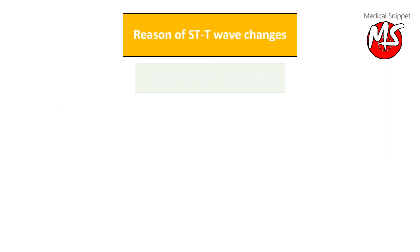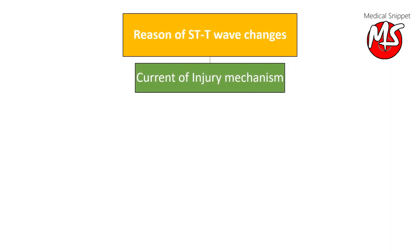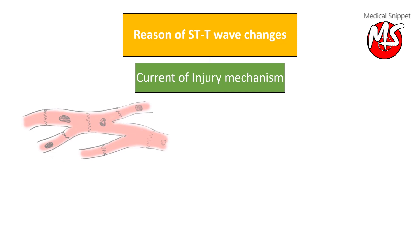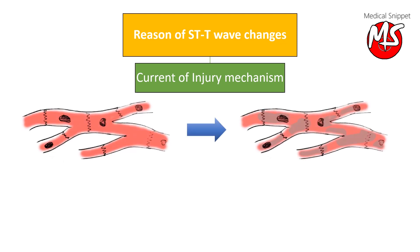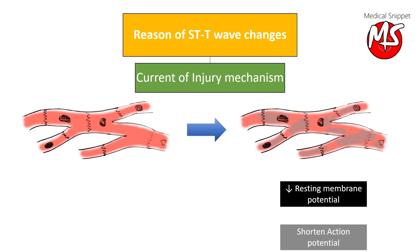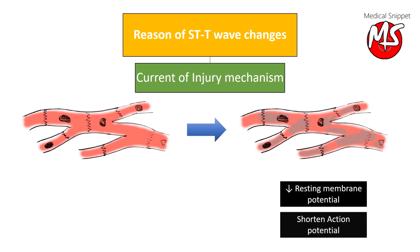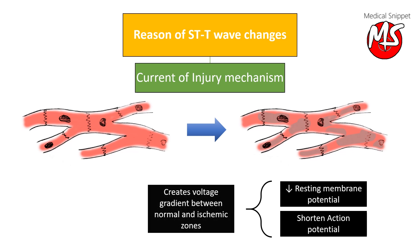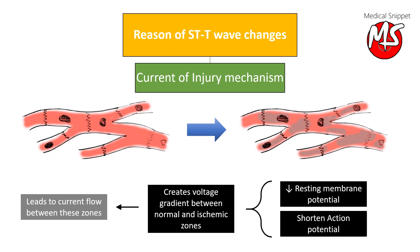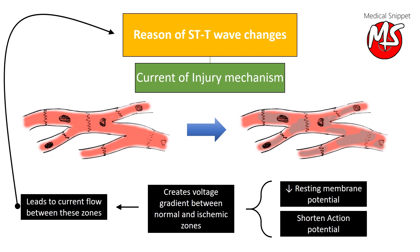ST and T wave changes in ECG are due to the current of injury mechanism. When normal myocardium gets infarcted, there is a decrease in resting membrane potential and the action potential shortens. This creates a voltage gradient between normal and ischemic zones so that current flows between these zones, causing changes in the ST and T wave in the ECG.